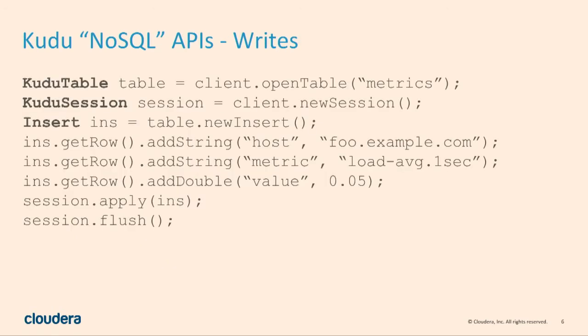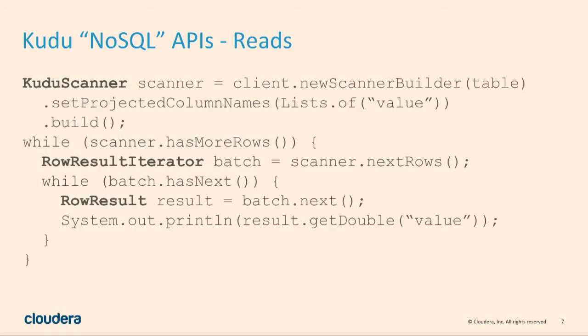The NoSQL API looks very much like other NoSQL APIs you might have seen. We have Java, C++, and Python. A couple of community members have written things like Rust and Go, but they're not really first class yet. If you want to read from the NoSQL API, you can create scanner objects and get data from a single client. These are very low latency operations — you're going directly to the correct servers and getting responses on the order of milliseconds, using indexed lookups to update, insert, or read.